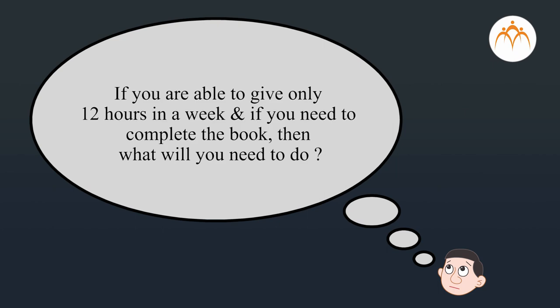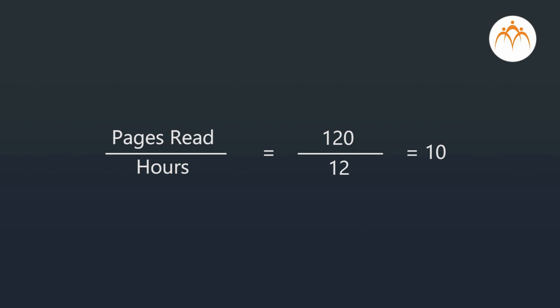Yes, I've understood. Now solve this in a similar way: if you are able to give only 12 hours in a week and need to complete the book, what will you need to do? 120 pages need to be completed in 12 hours. Pages read divided by hours equals 120 divided by 12, which equals 10. If we put hours as 1, pages read divided by 1 equals 10, so pages read equals 10. If we need to complete the book in 12 hours, 10 pages will need to be read in one hour. Very good, Sai — you have solved this perfectly.